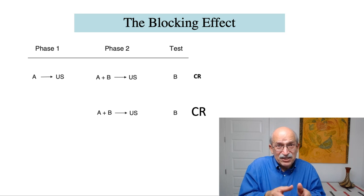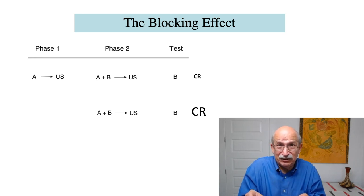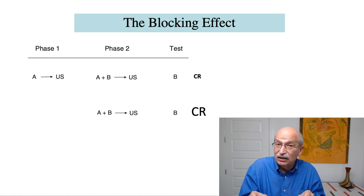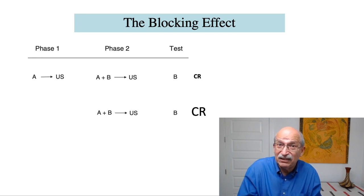Is there an error to be corrected in phase two for the first group when stimulus B is introduced? Well, when stimulus B is introduced, A already completely predicts the U.S. So there's no prediction error. If there's no prediction error, there's no motivation to learn anything. And as a consequence, the subject does not learn anything, if very much, if anything at all, to stimulus B. You test stimulus B, and you get very little responding.